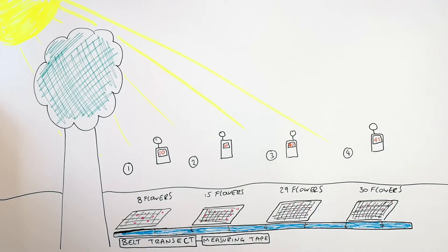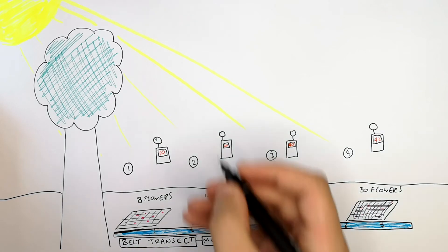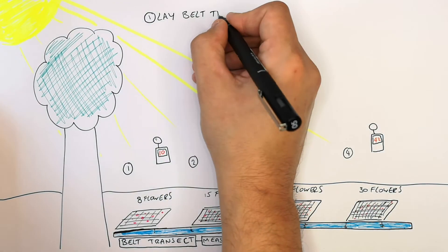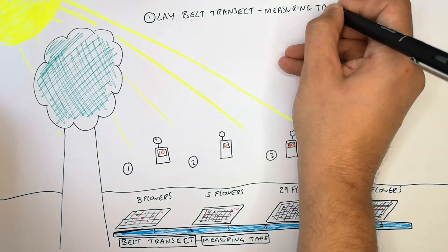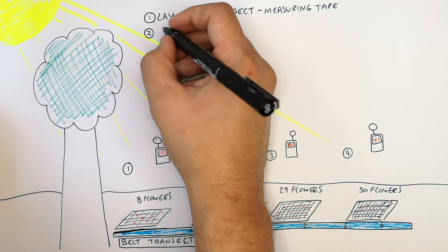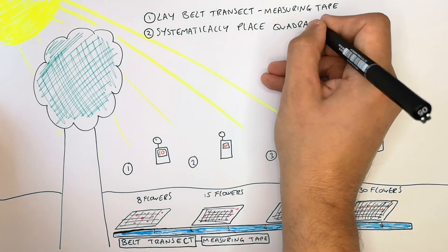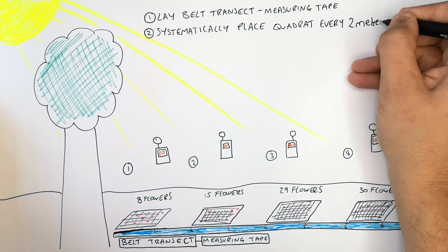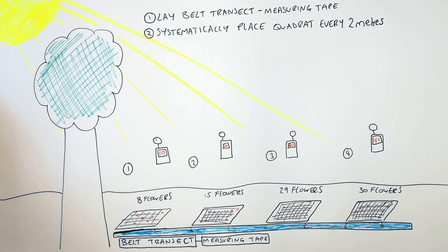The method for using a belt transect, which is systematic sampling, is as follows. You lay the belt transect, which is a measuring tape, then you systematically place the quadrat at regular intervals — in this example every 2 metres, though it doesn't have to be exactly 2 metres, just a regular interval.